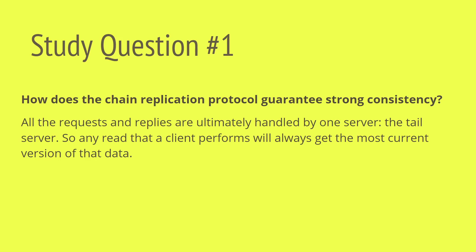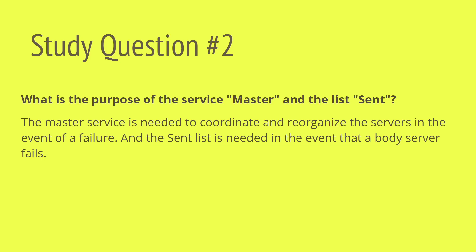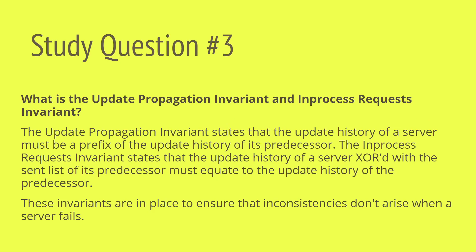So let's review some of the things we've learned to answer the study questions. How does the chain replication protocol guarantee strong consistency? All the requests and replies are ultimately handled by one server — the tail server — so any read that a client performs will always get the most current version of that data. Question two: what is the purpose of the master service and the sent list? The master service is needed to coordinate and reorganize the server in the event of a failure, and the sent list is needed in the event that a body server fails. Additionally, the master service is used for extending the chain. Question three: what is the update propagation invariant and the in-process requests invariant? The update propagation invariant states that the update history of a server must be a prefix of the update history of its predecessor. The in-process requests invariant states that the update history of a server combined with the sent list of its predecessor must equate to the update history of the predecessor.